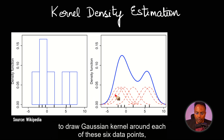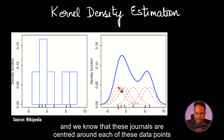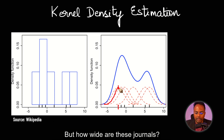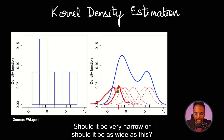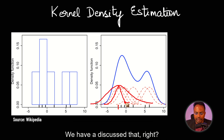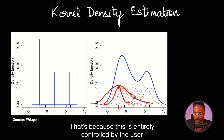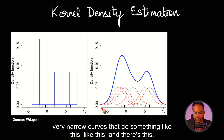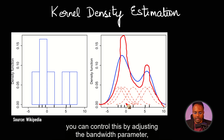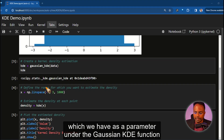A natural follow-up question is: we know that we are going to draw Gaussian kernels around each of these six data points, and we know that these kernels are centered around each of these data points, but how wide are these kernels? Should it be very narrow or should it be as wide as this? We haven't discussed that. That's because this is entirely controlled by the user. If you want very narrow curves, you can control this by adjusting the bandwidth parameter, which we have as a parameter under the Gaussian KDE function.